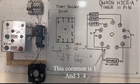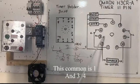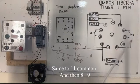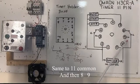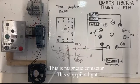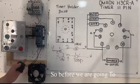This common is 1 and 3, 4, same to 11 is common, and then 8, 9. And ito ay magnetic contactor, ito ay stoplight.